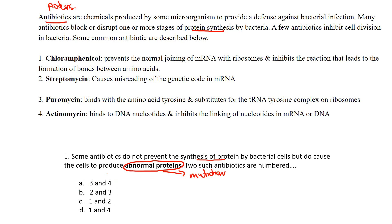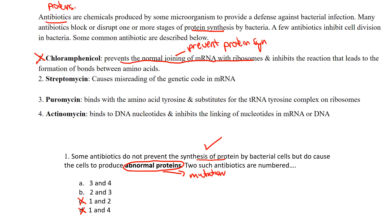They give us a bunch of different possibilities. Let's take a look at number one: it actually prevents the normal joining of messenger RNA with ribosomes. If mRNA doesn't join with the ribosomes, that's going to prevent the protein from being produced — it's going to prevent protein synthesis entirely. That's not what the question is asking for. So right away we can eliminate options C and D, because number one prevents formation, which stops or inhibits the actual protein synthesis process at one of the first steps of translation.